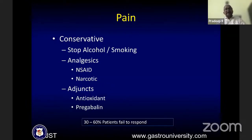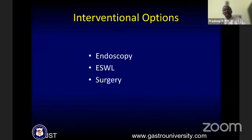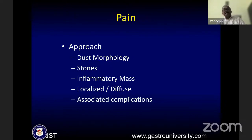As the first speaker highlighted, the most important steps are to stop alcohol and smoking, and use analgesics — NSAIDs following the WHO pain step pattern — with narcotics restricted as a last option. Adjuncts like antioxidants and pregabalin are available. About 30 to 60% of patients fail to respond to conservative treatment and may end up requiring intervention. Options like endoscopy or ESWL are considered, and surgery is for patients who are not candidates for endoscopic therapy or where endotherapy fails. The surgical approach depends on duct morphology, strictures, stone load, presence of inflammatory mass, and extent of pancreatic involvement.